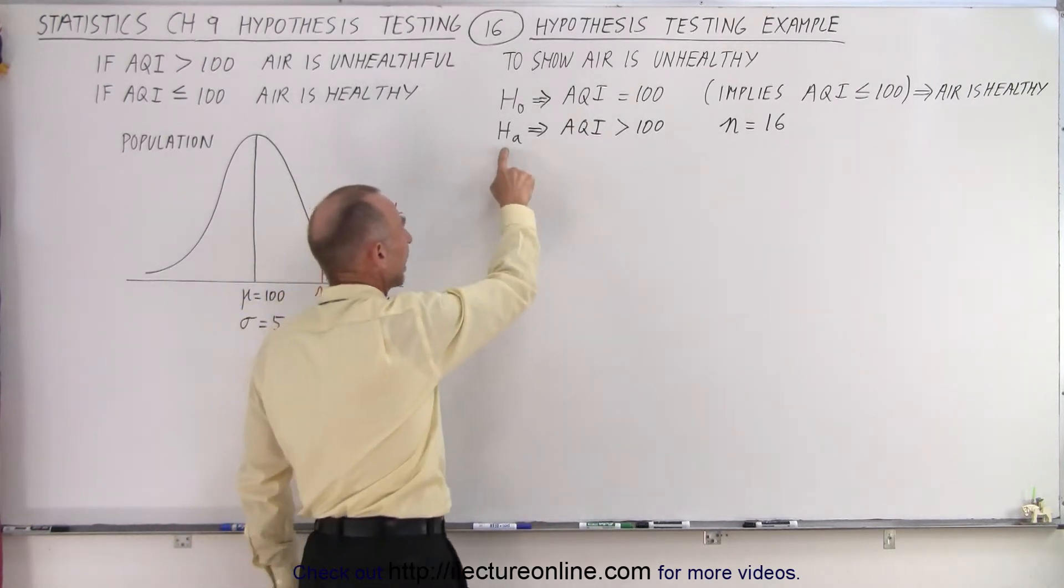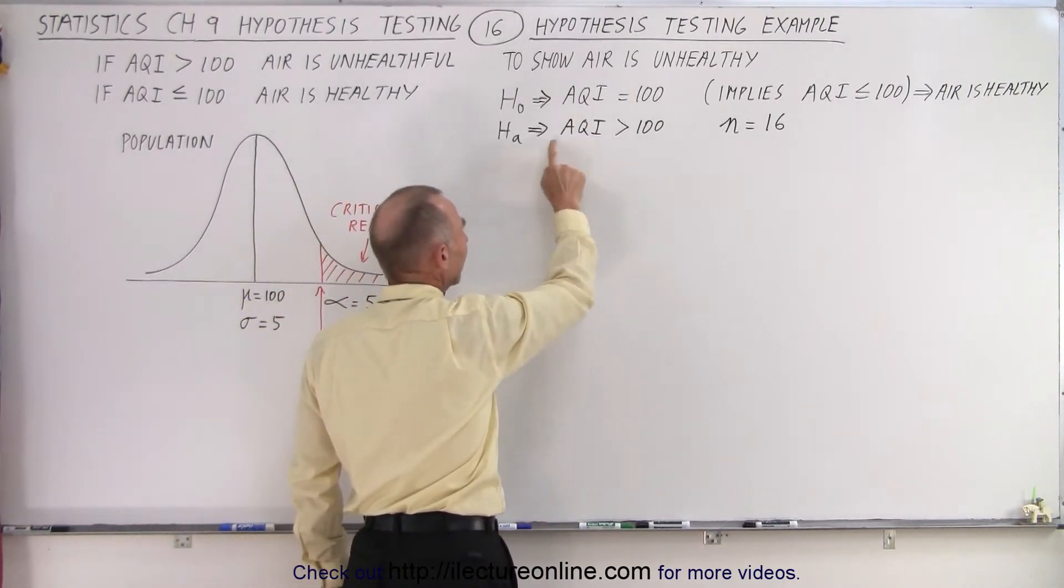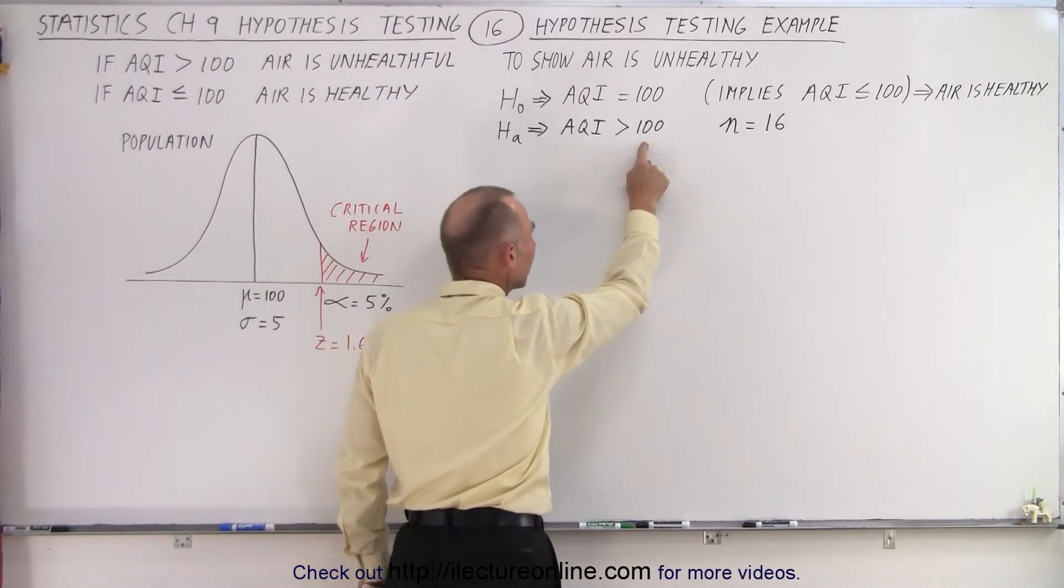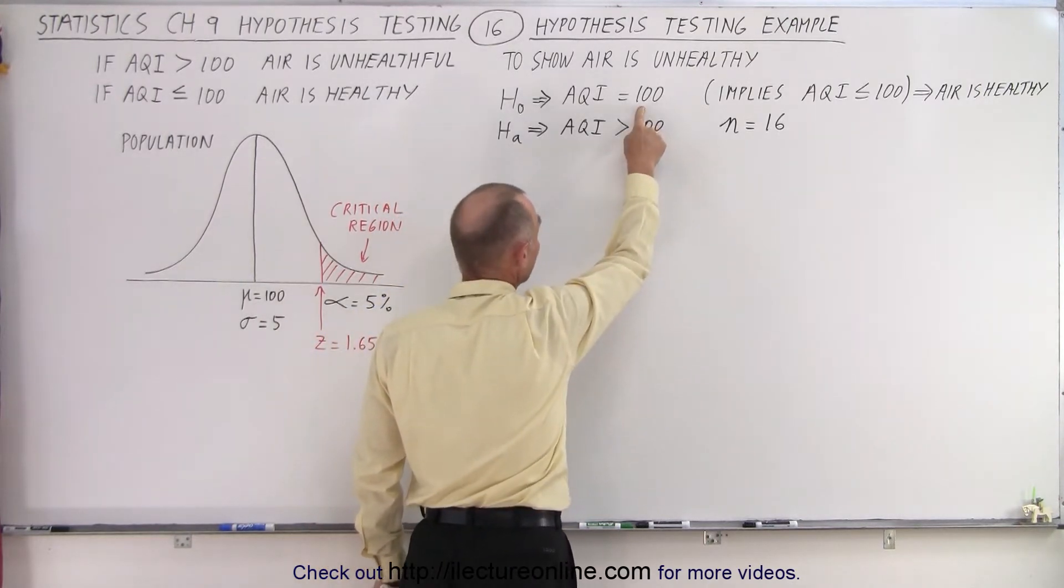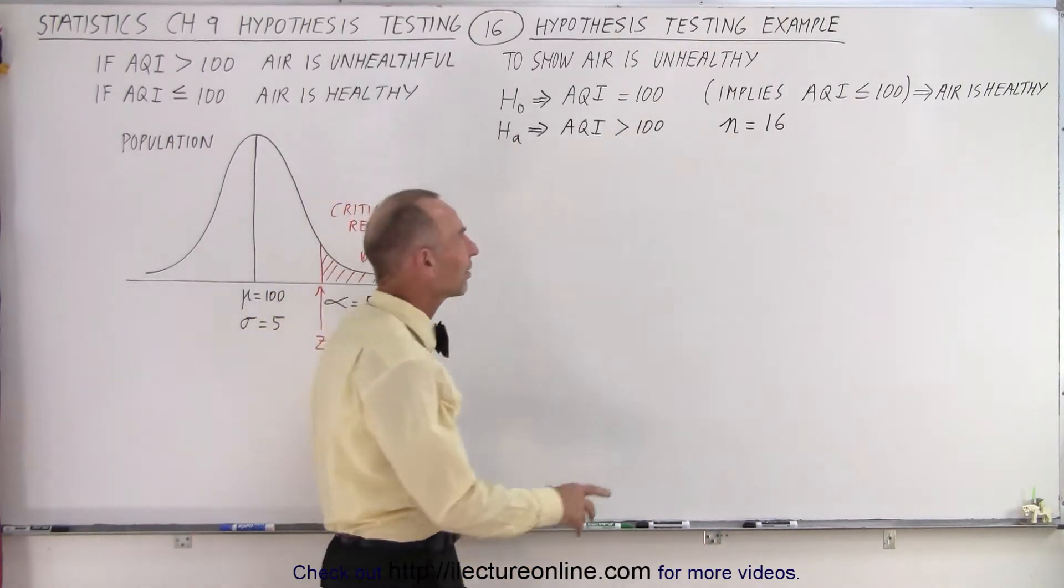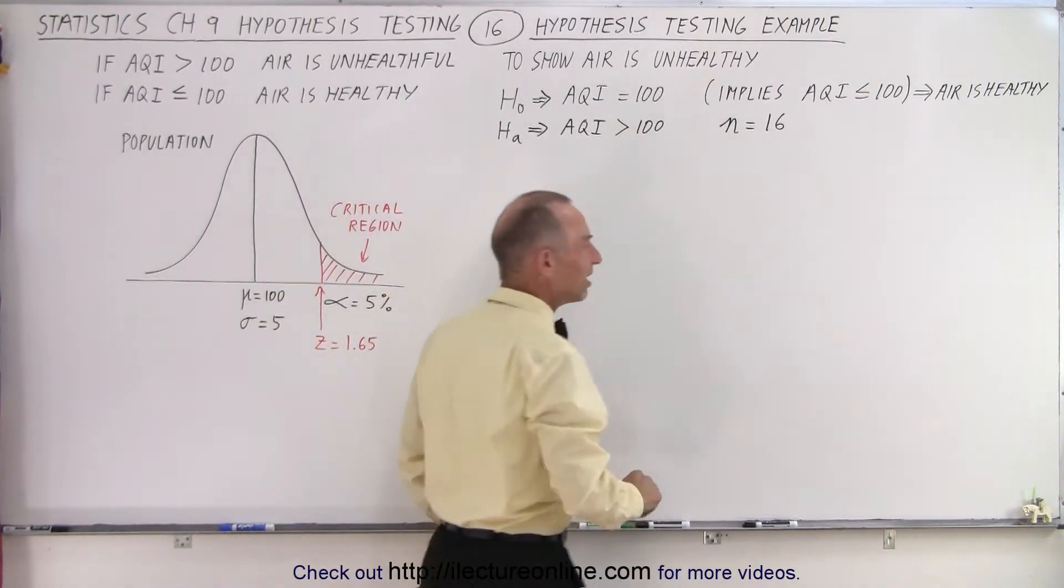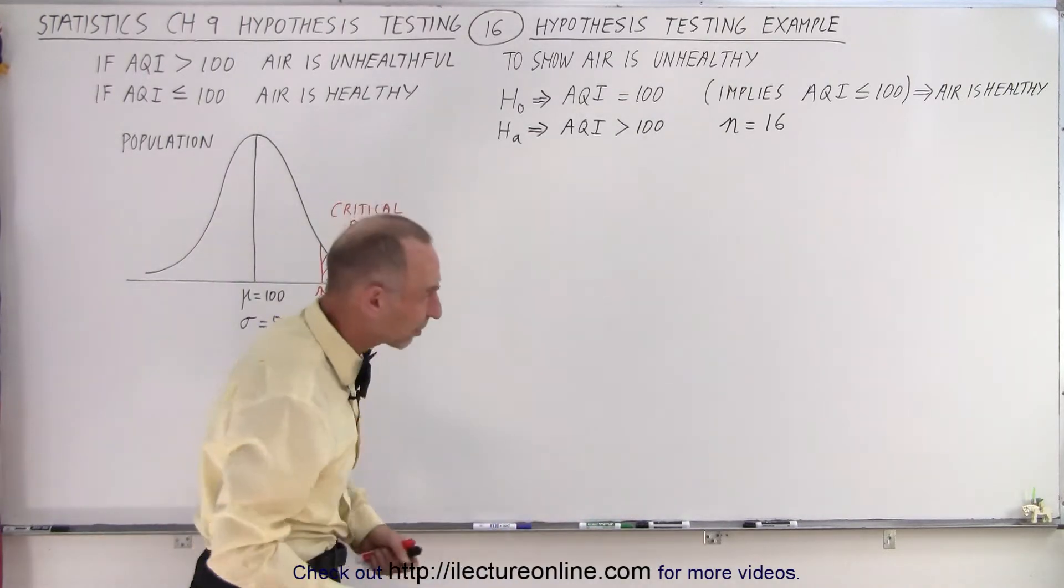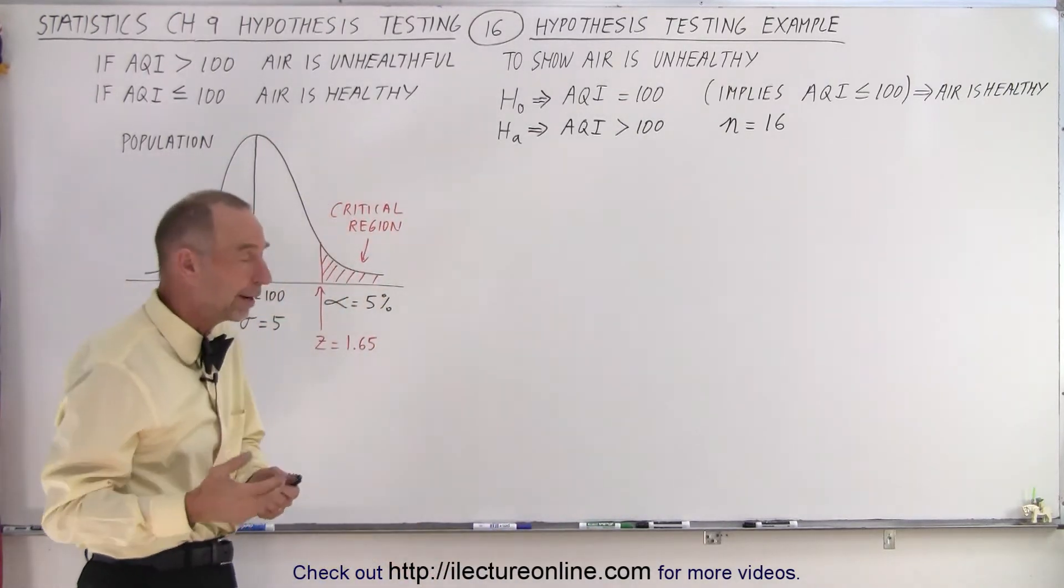And then we have an alternate hypothesis that says that the air quality index is greater than 100. Well, if it's not equal to 100 or not less than 100, it must be greater than 100. And also we're going to let the sample size equal 16. So we're going to take a sample, sample size of 16, and test our hypotheses.